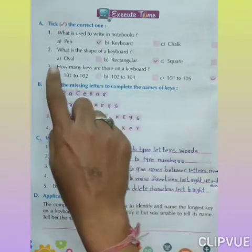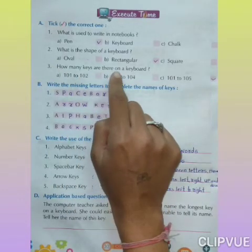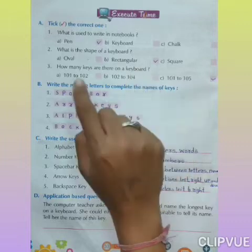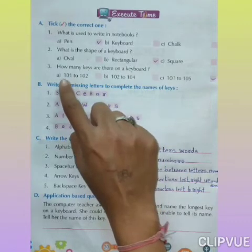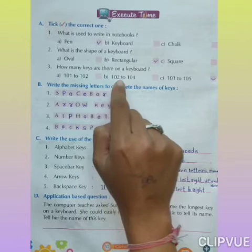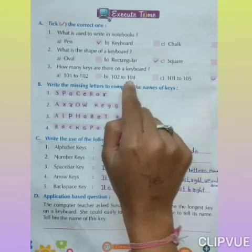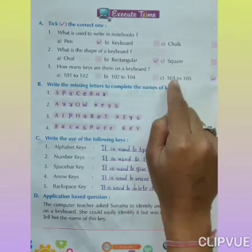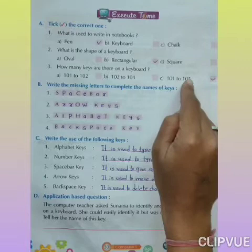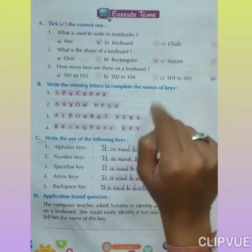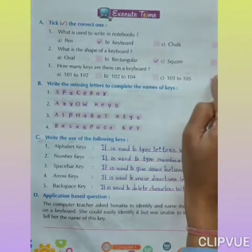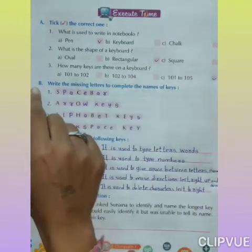Number 3: How many keys are there on a keyboard? Options are: A. 101 to 102, B. 102 to 104, C. 101 to 105. Which one is correct? B is correct — 102 to 104. So tick in the given box, B.